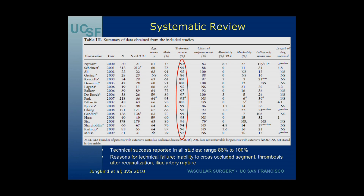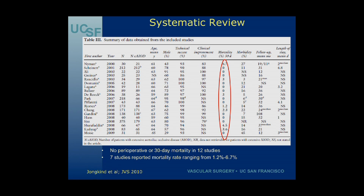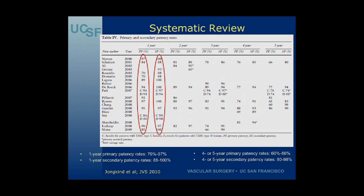The most common reasons for technical failure were inability to cross the occluded segment, thrombosis after recanalization, and iliac artery rupture. Zero perioperative and 30-day mortality was reported in 12 of these studies; in the other seven, mortality ranged from 1% to 6.7%. One-year primary patency ranged from 70% to 97%, and one-year secondary patency was better at 88% to 100%. Four- to five-year primary patency was 60% to 86%, and secondary patency at five years was 80% to 98%.